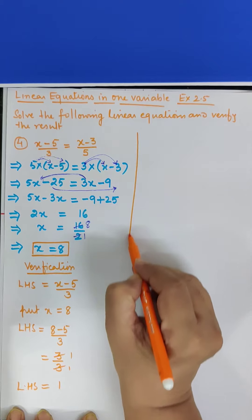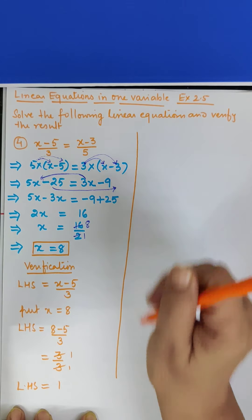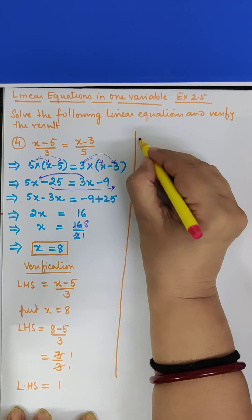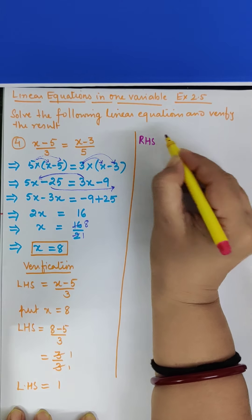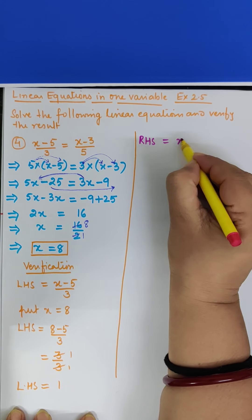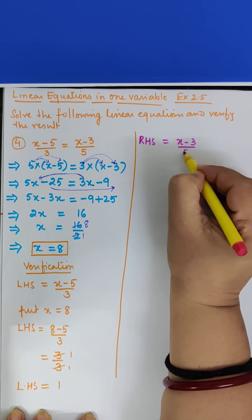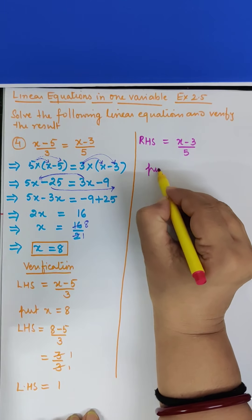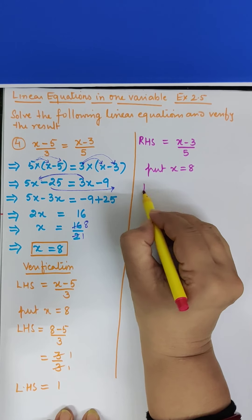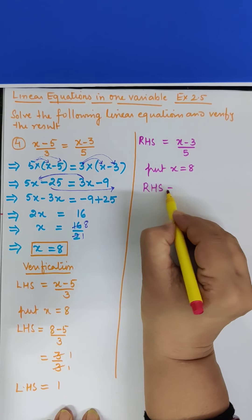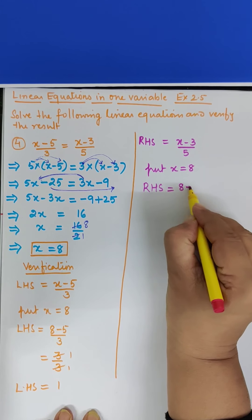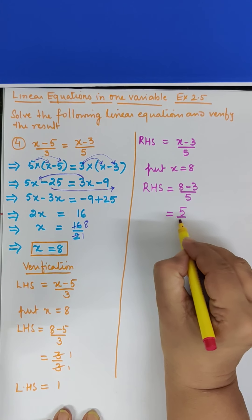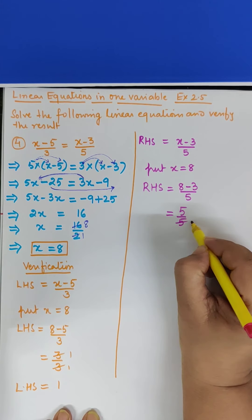Ab hum RHS nikalte hain. RHS kya hai, x minus 3 upon 5. Ab hum put karte hain, x equal to 8. To RHS kya ho jayega. 8 minus 3 upon 5.